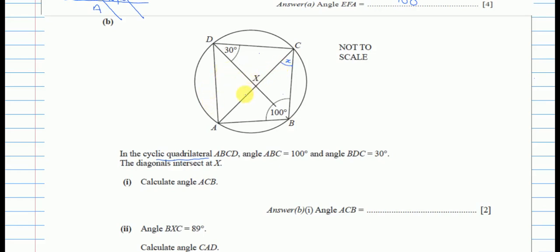Angle ACB starts from A, touches the circle, and ends at B. There's another angle that also starts at A and ends at B on the circle — angle ADB — so that angle equals X as well. Since opposite angles in a cyclic quadrilateral add up to 180, and ABC is 100, angle ADC is 80. With angle BDC being 30, angle ADB is 50. So X equals 50 degrees.